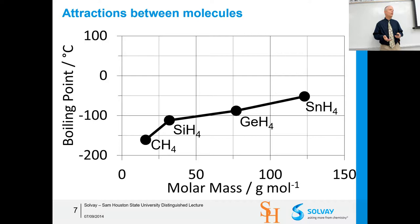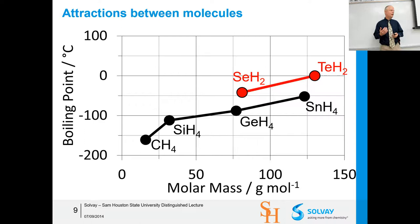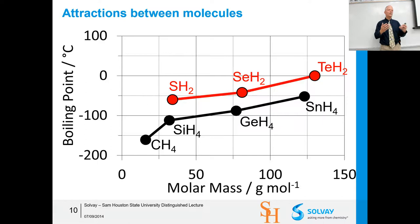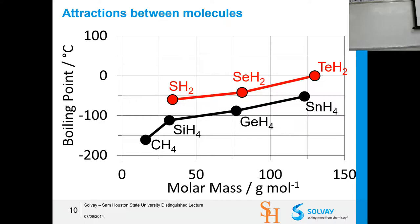Jumping over two groups into the chalcogen — the oxygen group — we now have an asymmetric molecule. Asymmetry gives the chance for a dipole moment, so it's a polar molecule. Tellurium is very similar in mass to the tin hydride but has a higher boiling point, so it's not just a mass effect. Moving up the periodic table through selenium and sulfur, the asymmetric molecules are almost always just a little higher than the symmetric molecules.